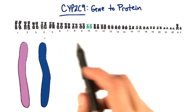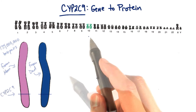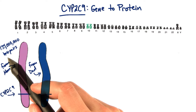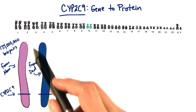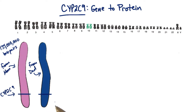CYP2C9 can be found on chromosome 10 of the human genome. Chromosome 10 is about 135 million base pairs long, and the CYP2C9 gene can be found towards the end of the chromosome.